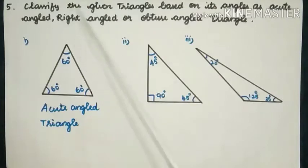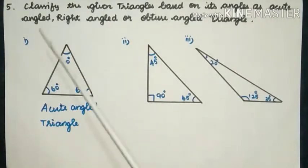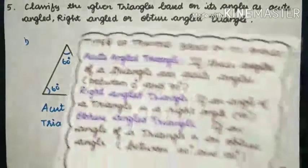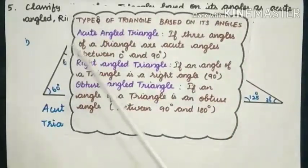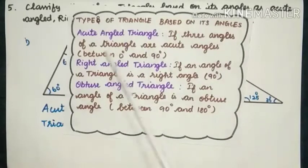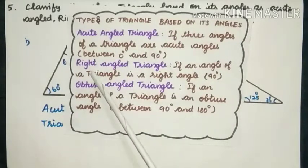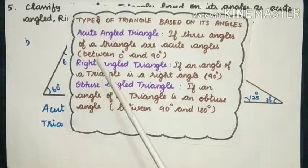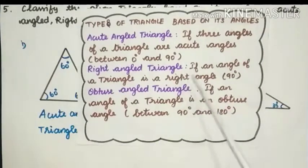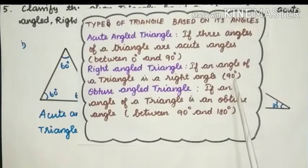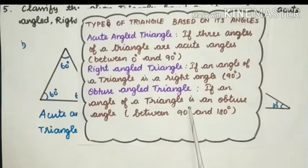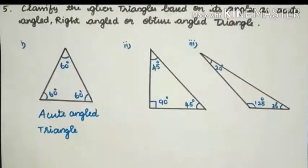Fifth one: classify the given triangles based on its angles as Acute Angled, Right Angled or Obtuse Angled triangle. Let's recall: Acute Angled triangle — all three angles lie between 0° and 90°. Right Angled triangle — one angle is exactly 90°. Obtuse Angled triangle — one angle lies between 90° and 180°.